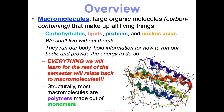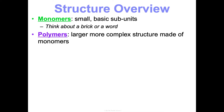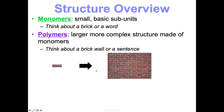Before we jump into each one, understand structurally how they work. Most of these biological molecules are polymers made out of monomers. Monomers are small, basic subunits. Polymers are larger, more complex structures made of monomers. Think of a monomer like a brick that builds into a polymer, which is a brick wall. Or a monomer is like a word, and we build words into a sentence, which would be the polymer.